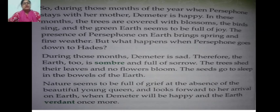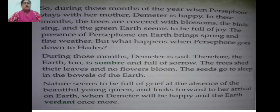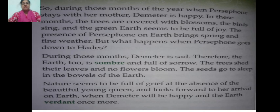Seeing Demeter in sadness, mother earth also becomes depressed and full of sorrow. The trees shed their leaves and no flowers bloom. The seeds go to sleep in the bosom of the earth — meaning the deep or innermost part of the earth. Nature seems to be full of grief at the absence of the beautiful young queen Persephone, and looks forward to her arrival on earth, when Demeter will be happy and the earth verdant — meaning fresh and green — once more.